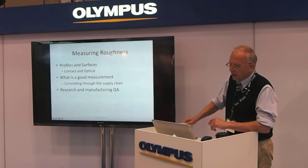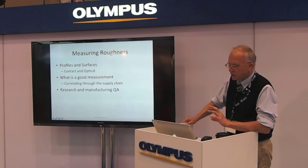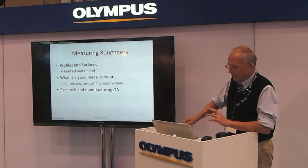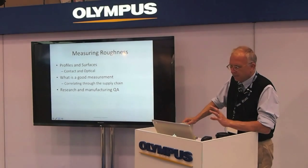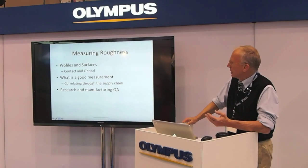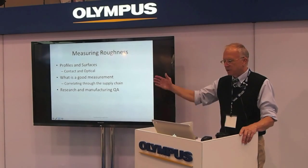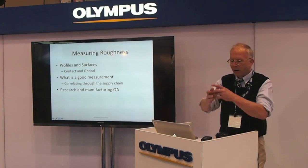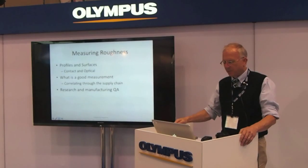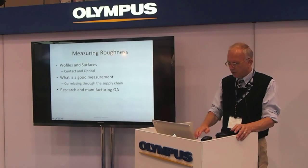Most companies are still using profilers and contact measurement, and we're going to compare that with optical measurements. One of the key points is how do you know you have a good measurement, and how can you verify that through the supply chain? You have the person that makes the machine, the person that makes the part, and then the person that integrates that part into a larger component — all of those people need to agree on how to measure and analyze the surface.